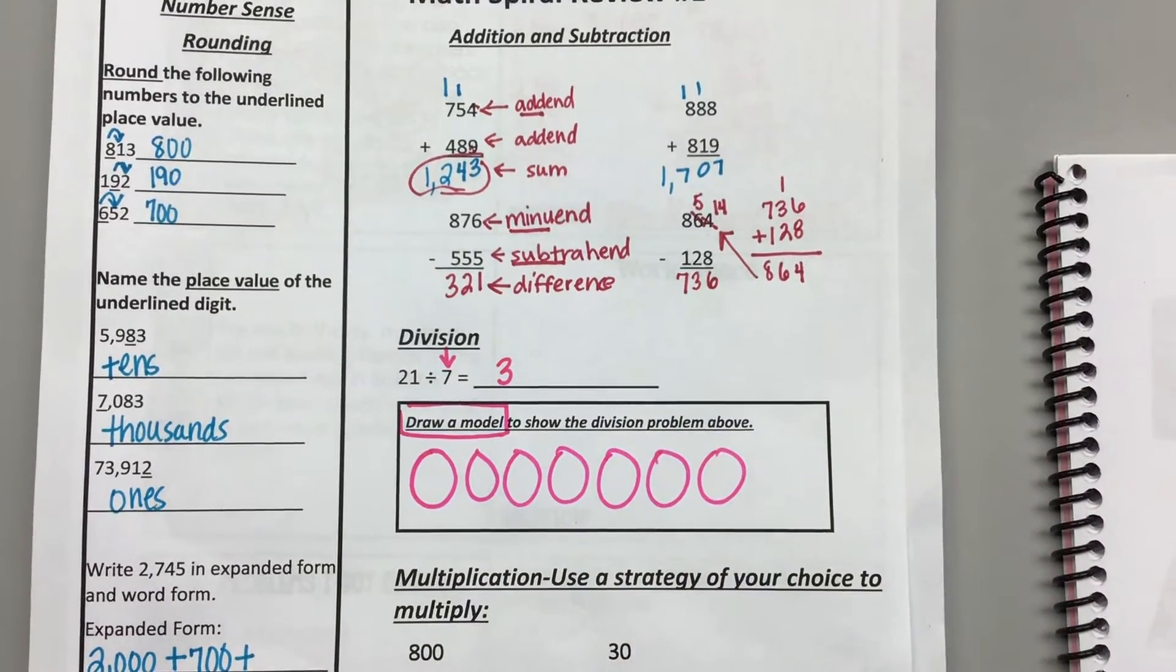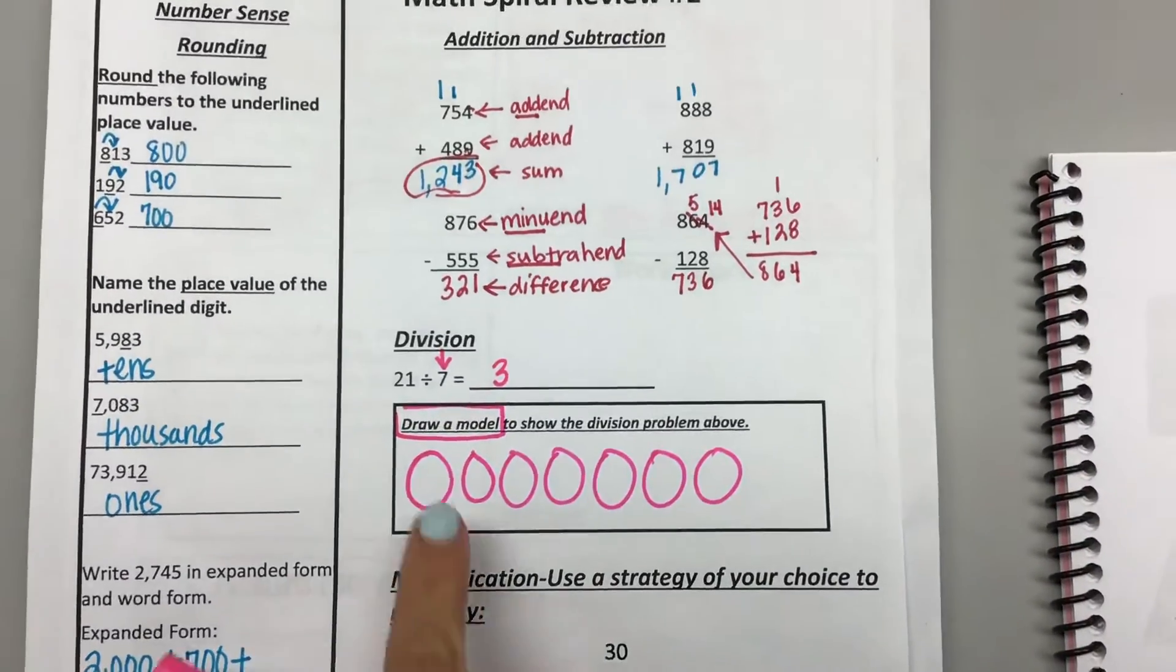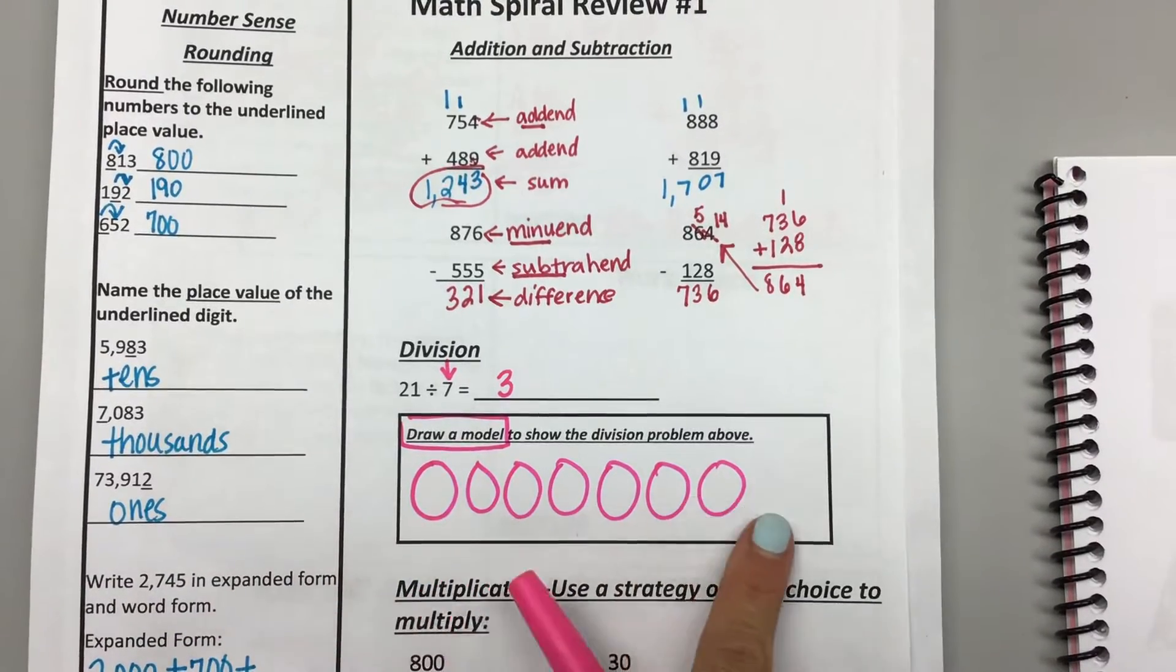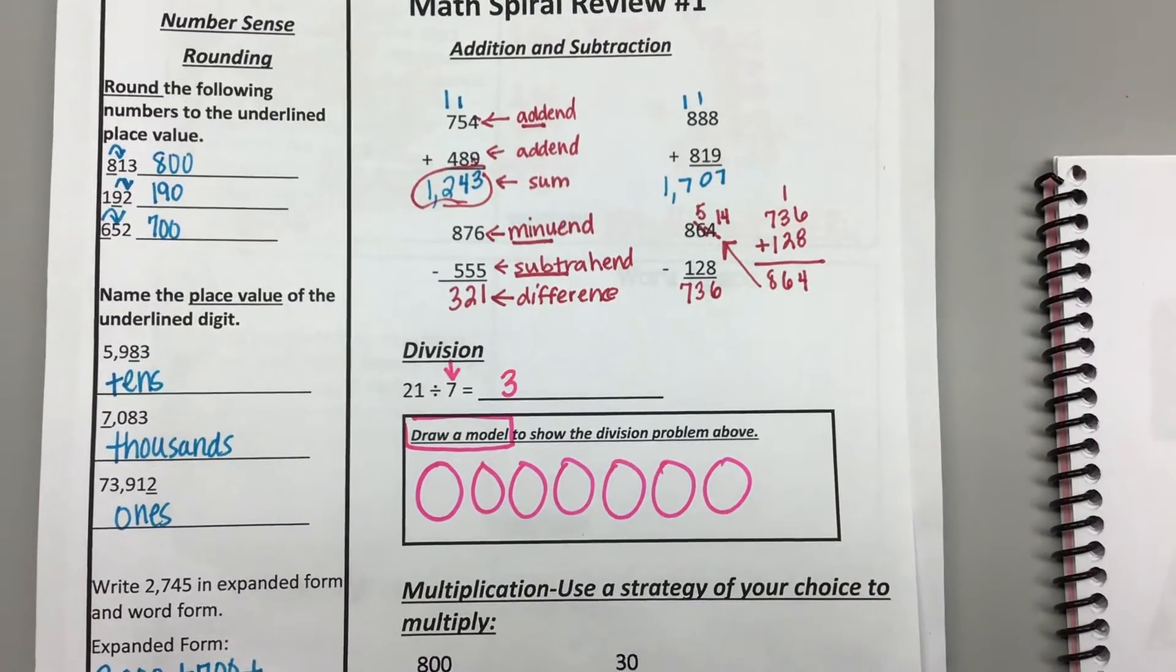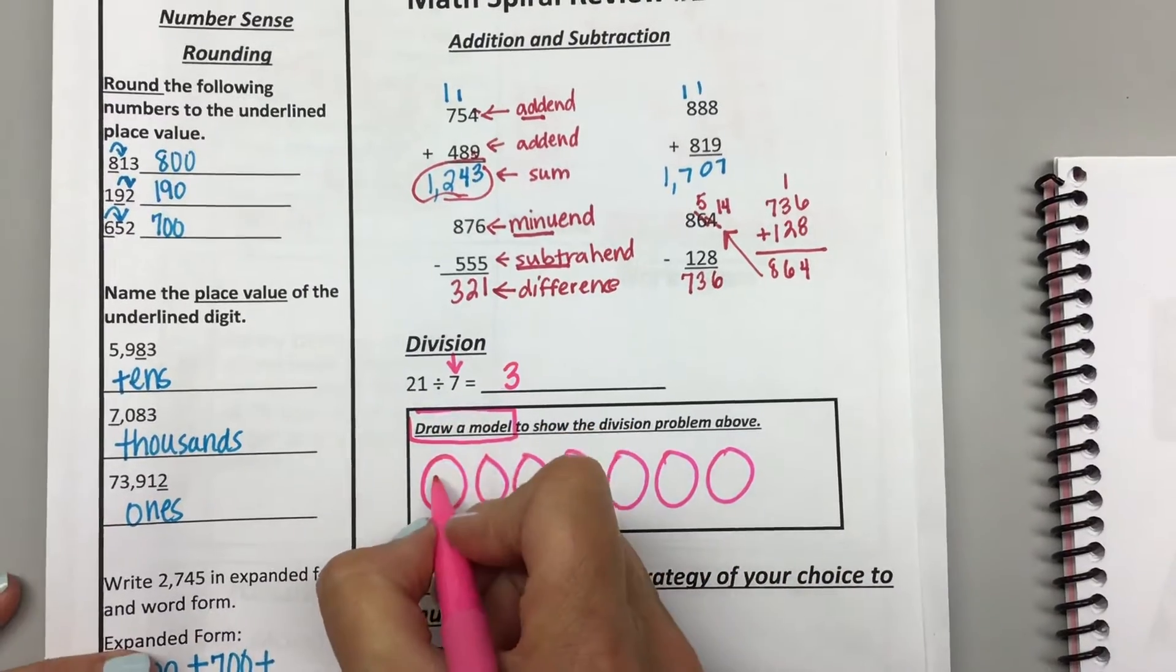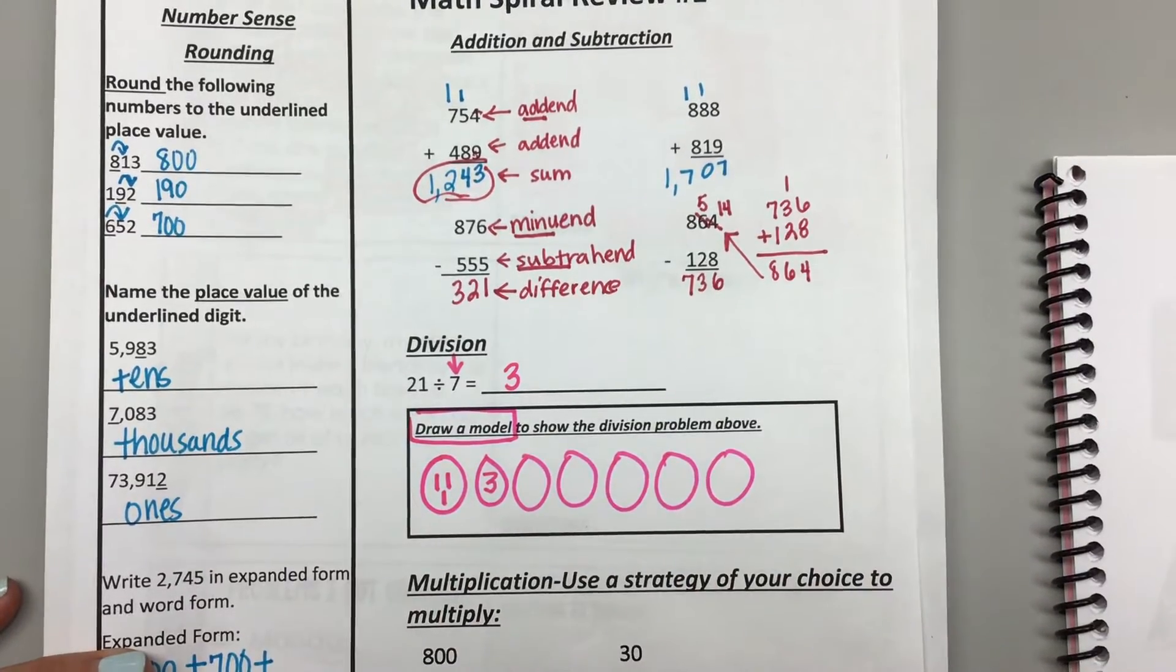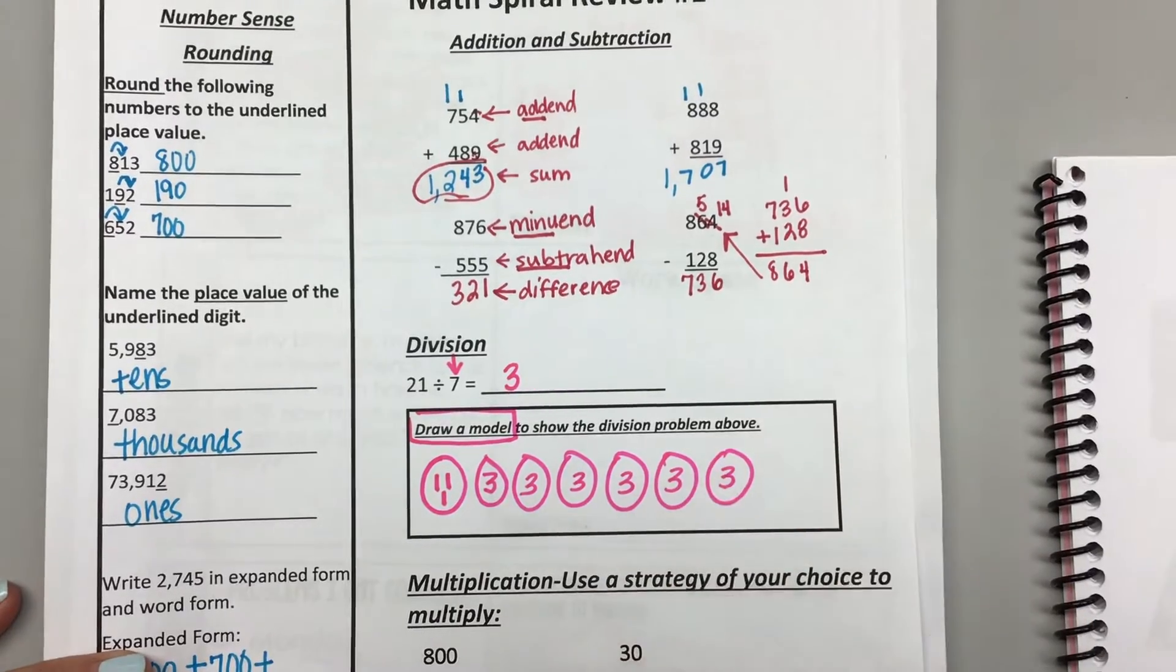And then how many are in each group? Ricky, how many do you think are in each group? If I take 21 and divide it into 7 groups, how many are in each group? Not 7. 3. Okay, now you can show 3 like this, or you can show 3 like this. It doesn't matter. Okay?